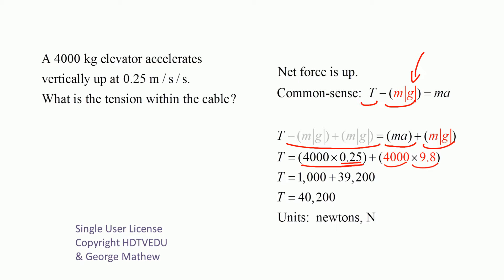What is 4,000 times 0.25? 1,000. What is 4,000 times 9.8? 39,200. What do we get when we add 39,200 to 1,000? 40,200. What is our answer in? Newtons. So our tension is 40,200 Newtons.